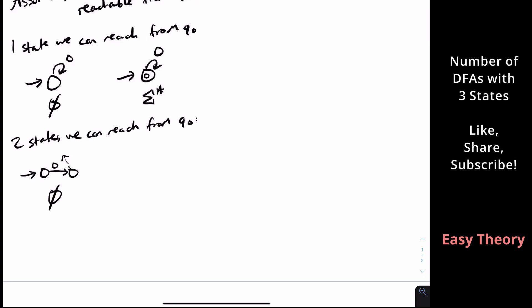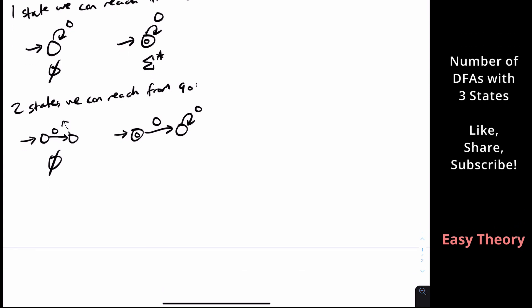Let's consider all cases. We could have the start state be final and send zero to a non-final state that loops on itself. In that case, the only string accepted is the empty string — remember, the empty set is not equal to the set containing the empty string. We can also have almost the same scenario where we go to the second state and the second state comes back, which gives all even-length strings: 0 to the 2i where i is at least zero.